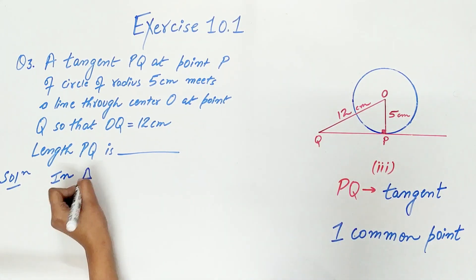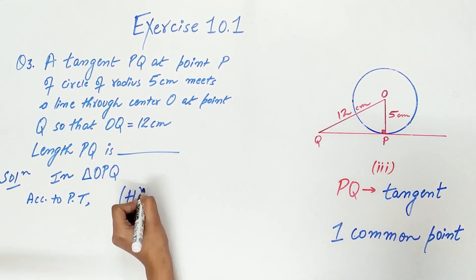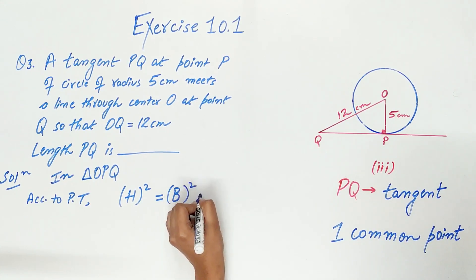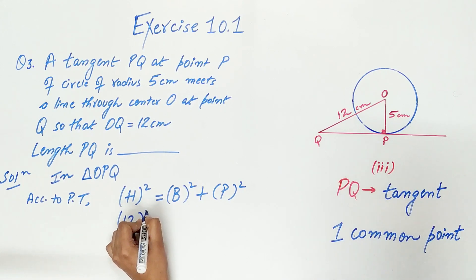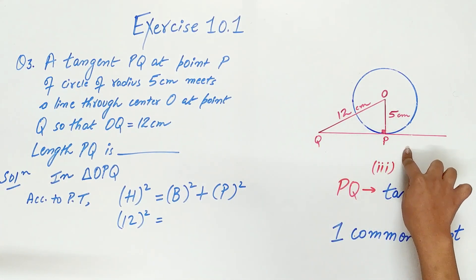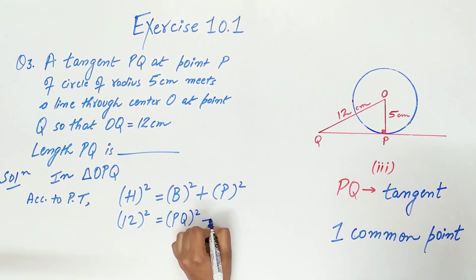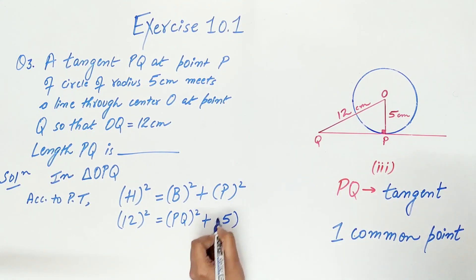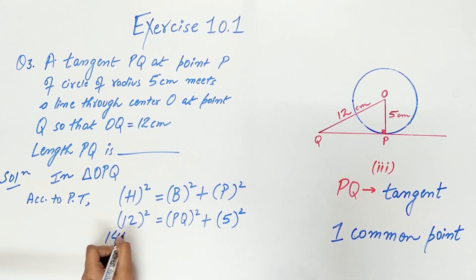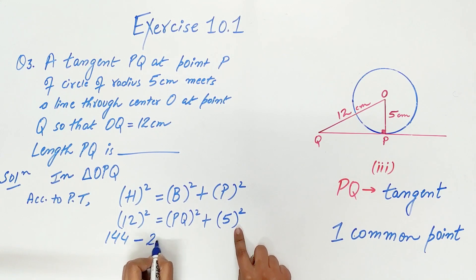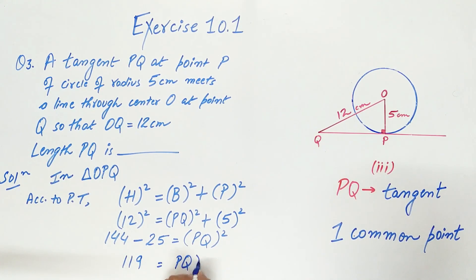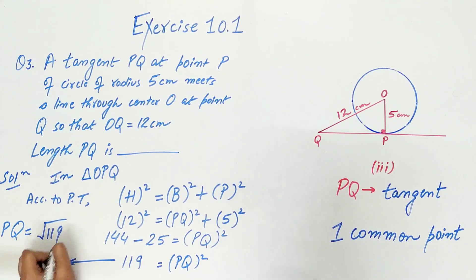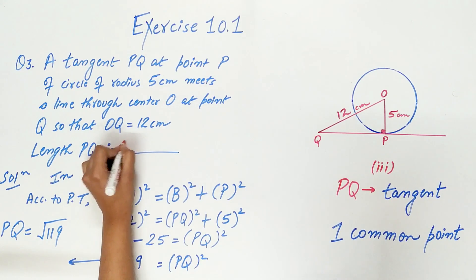In triangle OPQ, applying the Pythagorean theorem: hypotenuse² = base² + perpendicular². The hypotenuse OQ = 12 cm, the base is QP, and the perpendicular OP = 5 cm. So 12² = PQ² + 5², giving 144 = PQ² + 25, therefore PQ² = 144 − 25 = 119. Hence PQ = √119 cm.